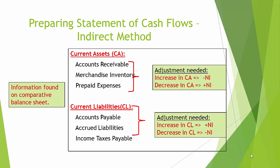Also under the operating activity section, we have to make adjustments for changes in three current assets: accounts receivable, merchandise inventory, and prepaid expenses. If there is an increase in a current asset, we need to subtract the amount of the change from net income. Conversely, if there is a decrease in a current asset, we would add the amount of the change back to net income.